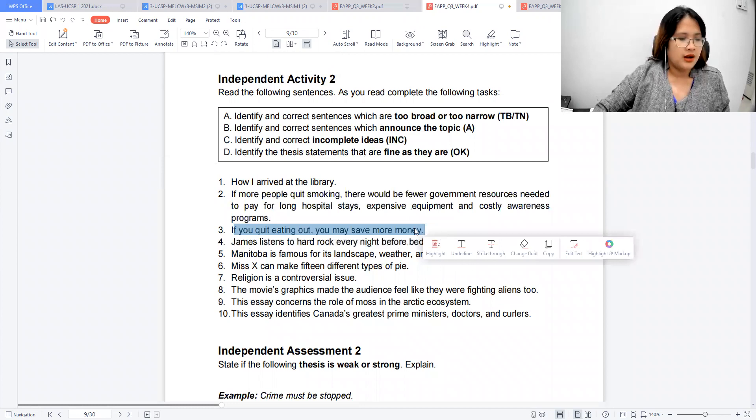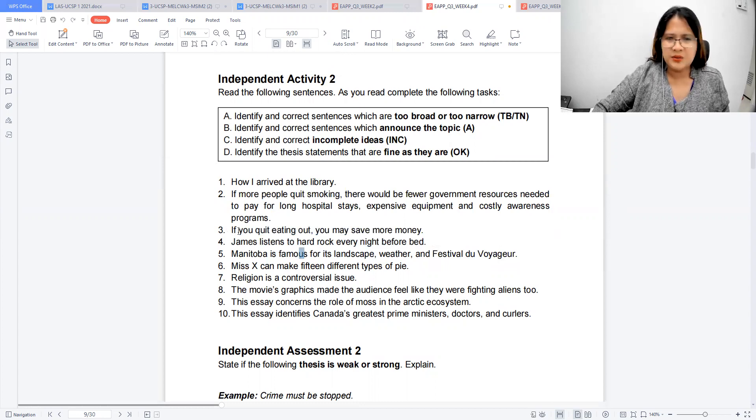Number three, if you quit eating out, you may save more money. This one appears to be too narrow. Because it's talking to you in general, and it doesn't fit to be like a thesis statement. If it could be a persuasive statement in a blog article, especially it's using the second person pronoun. But it could be made better. But again, it's too narrow.